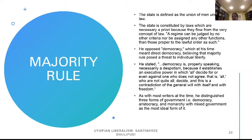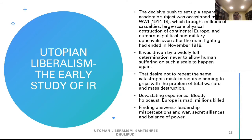As with most writers at the time, he distinguishes three forms of government — democracy, aristocracy, and monarchy — with mixed government as the most ideal form.